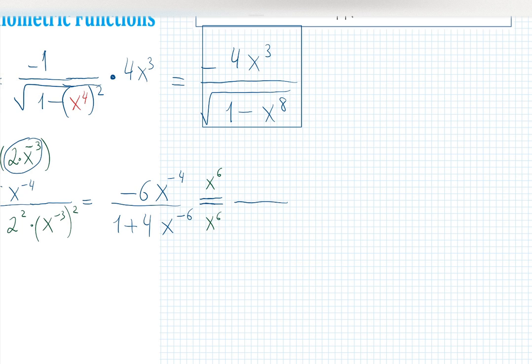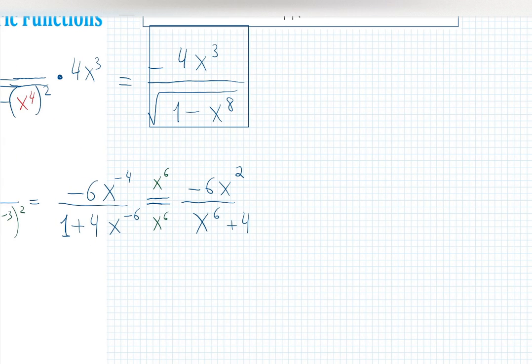Negative 6 times x⁻⁴ plus 6 becomes x². You add those exponents. 1 times x⁶ is x⁶ plus 4x⁻⁶ times x⁶ is 1. So this is the answer.